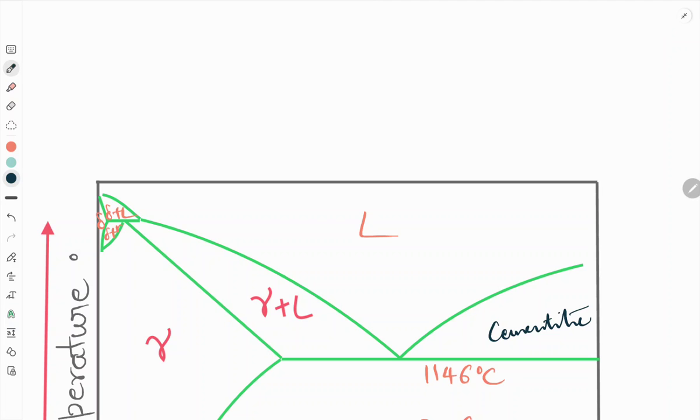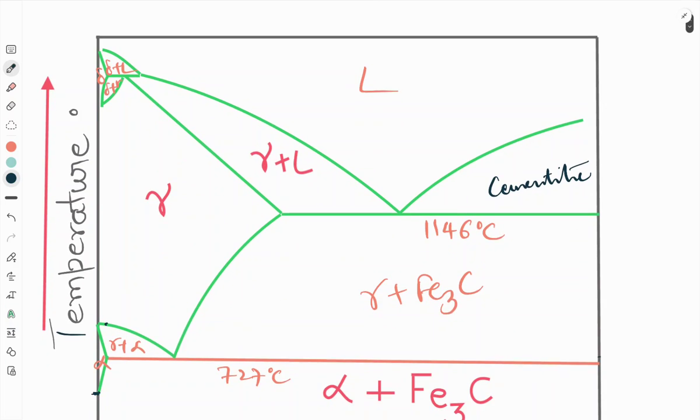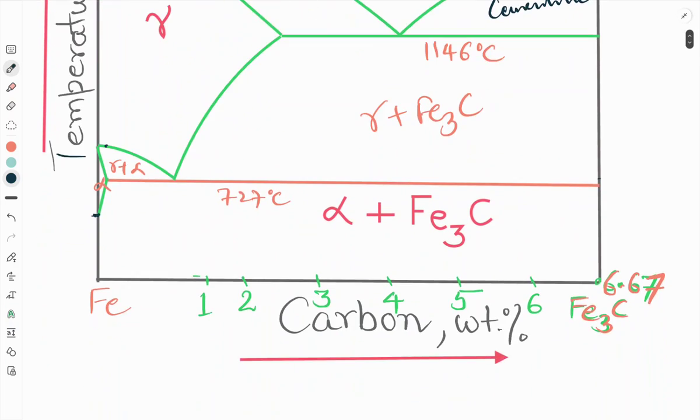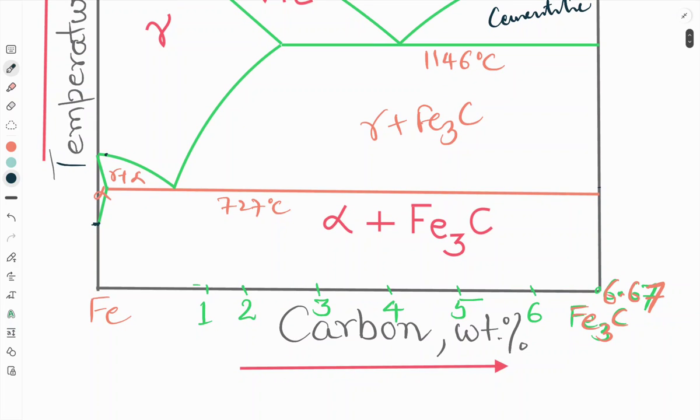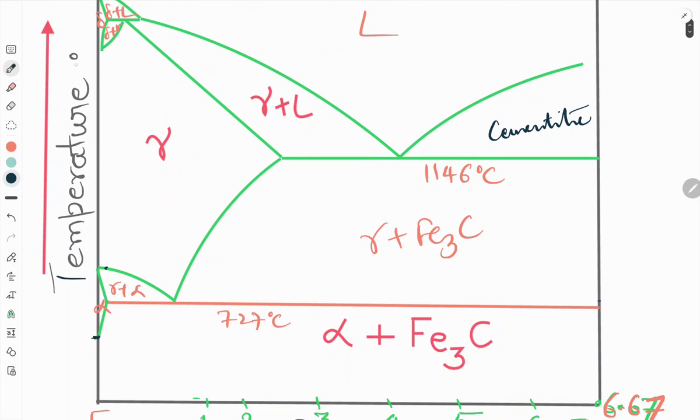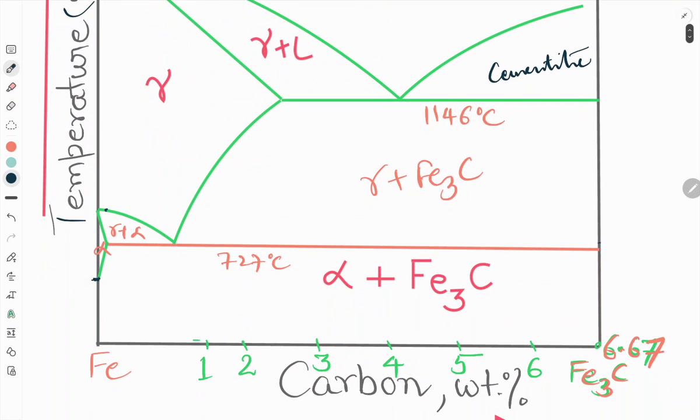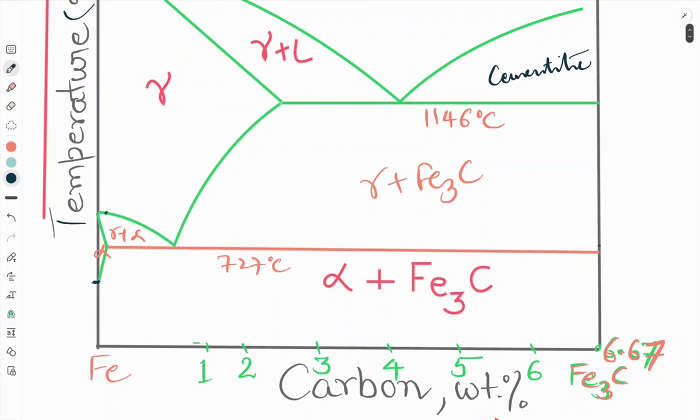Hello friends, welcome to our YouTube channel Metallurgical Engineering. Today in this video we will see the invariant reactions present in iron-carbon phase diagram. This is our iron-carbon iron-carbide metastable phase diagram. The x-axis is carbon in weight percent and y-axis is temperature in degree centigrade.